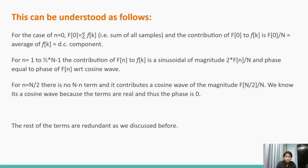For small n equals capital N by 2, there is no capital N minus n term, and it contributes a cosine wave of the magnitude F[N/2] divided by capital N. We know it's a cosine wave because the terms are real and thus the phase is zero. The rest of the terms are redundant as we discussed before.